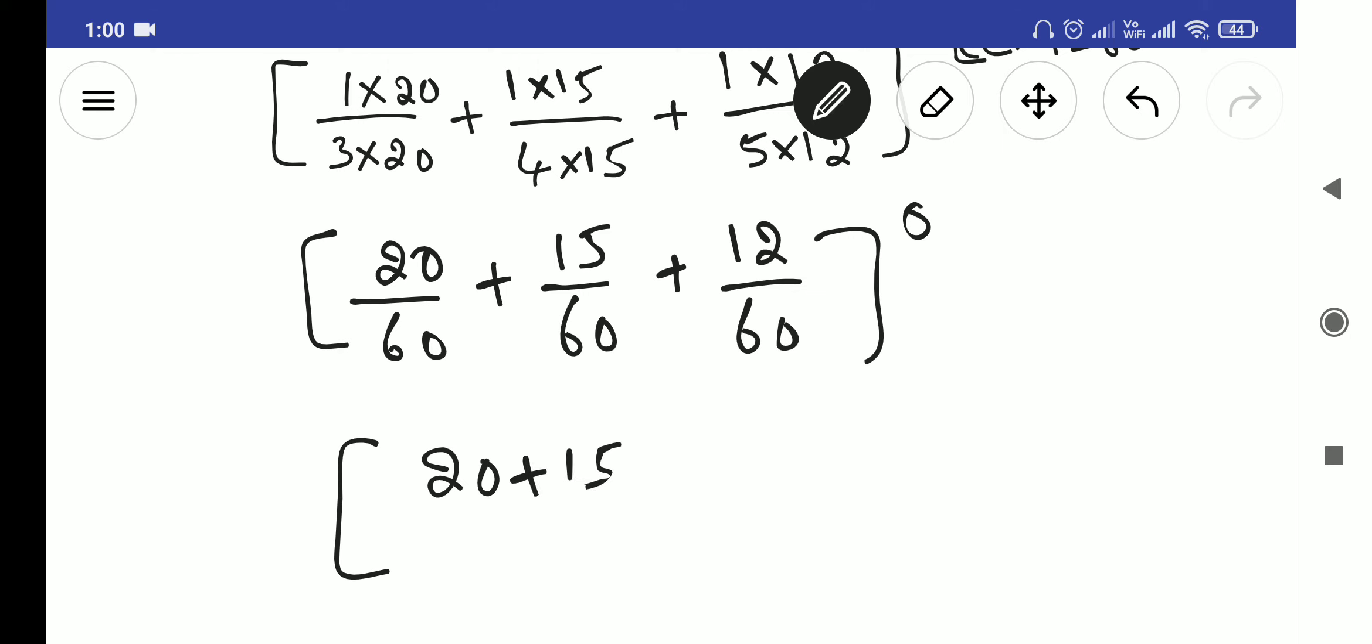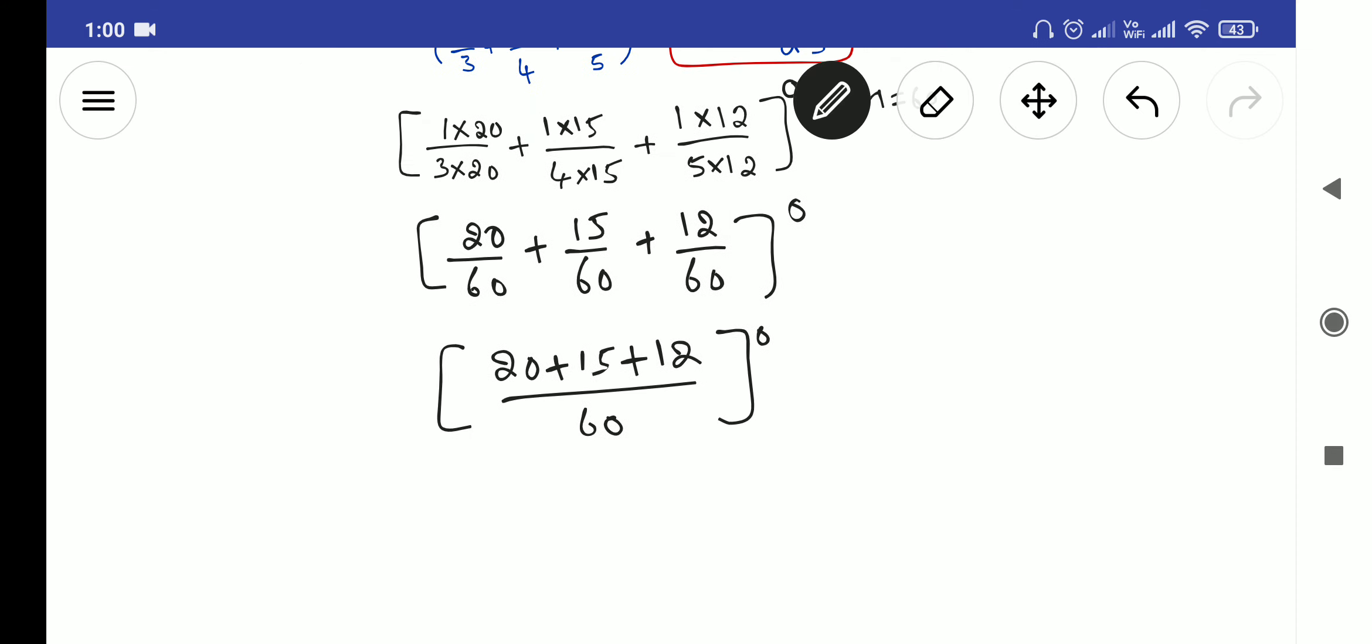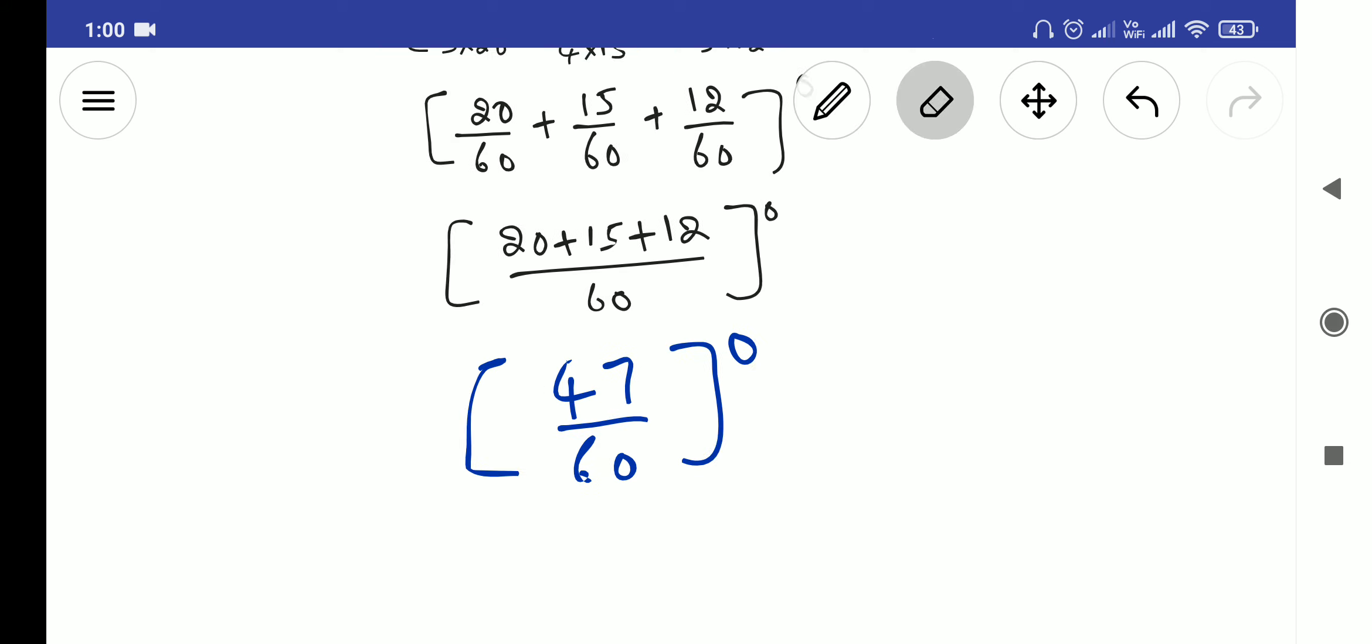Now if you, from this step it is, see, 20 plus 15 is 35, 35 plus 12 is 47 by 60, whole power 0. This is what I was telling in the starting, like you will get some fraction. The fraction you are having, this is like looking like a power 0 here. Finally, a is a fraction here, that is base 47 by 60 is a fraction.